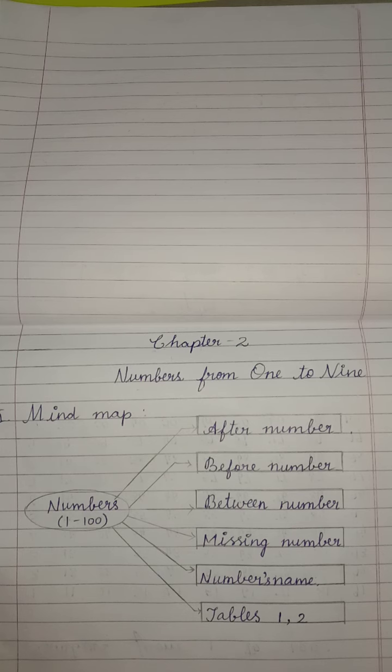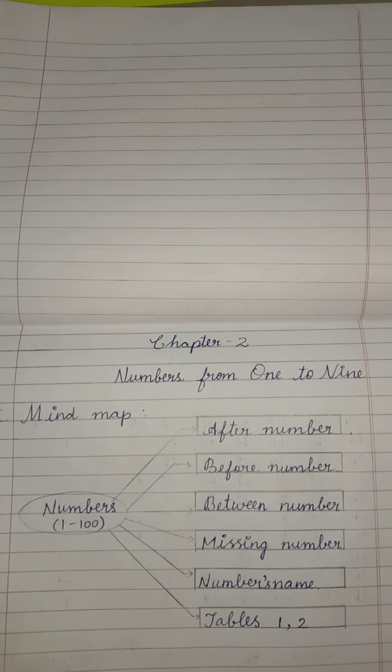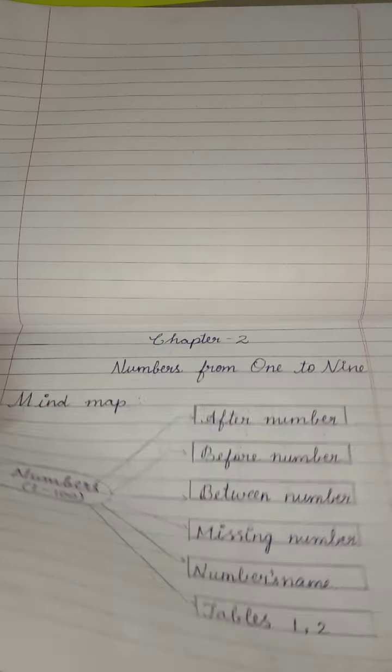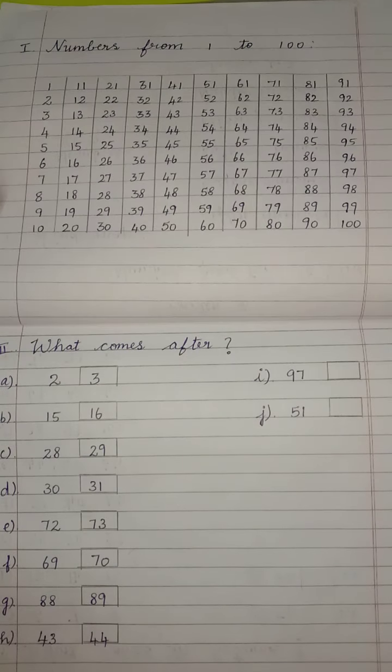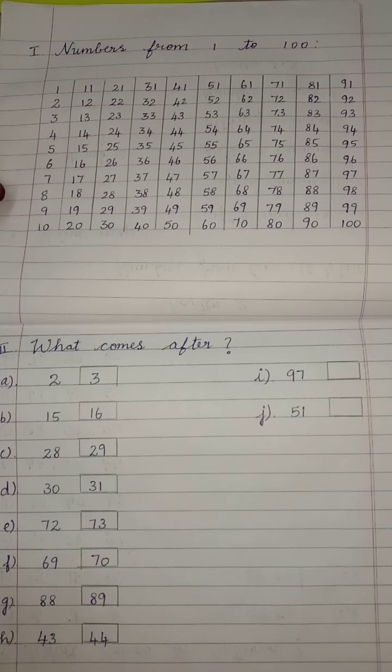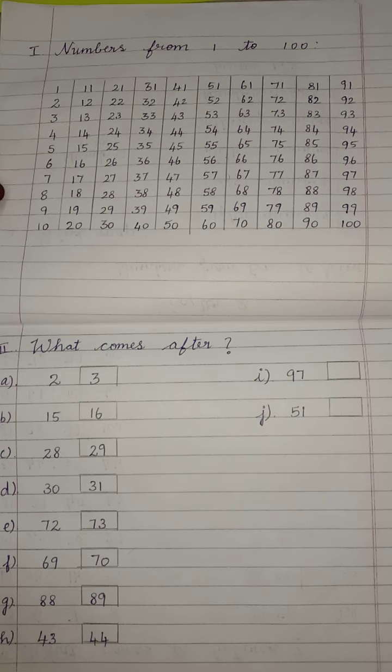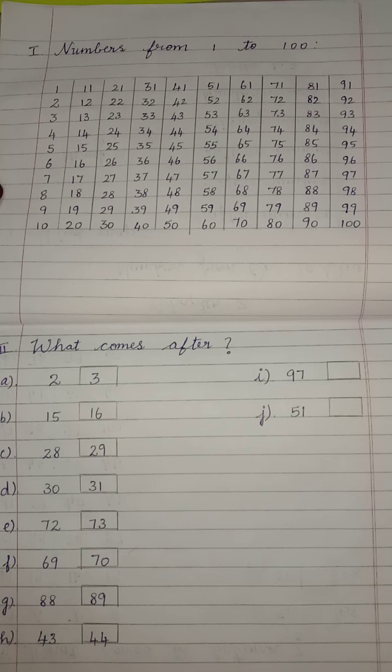So children, today's homework is: you have to write Romalator 1, mind map. Then Romalator 2, numbers from 1 to 100. Then Romalator 3, what comes after?